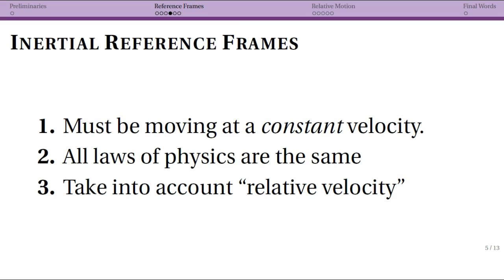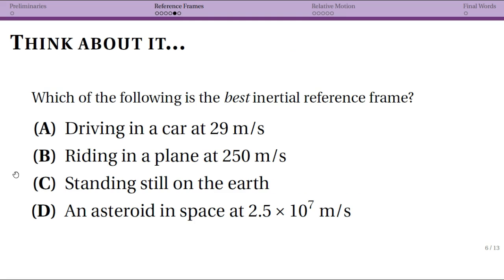Which of the following might you consider to be the best inertial reference frame? Driving in a car down the road at 29 meters per second, riding in an airplane at 250 meters per second, standing still on the surface of the earth, or being on an asteroid in space at 2.5 times 10 to the 7 meters per second? Pause the video and think about this. Which is going to be the best inertial reference frame?